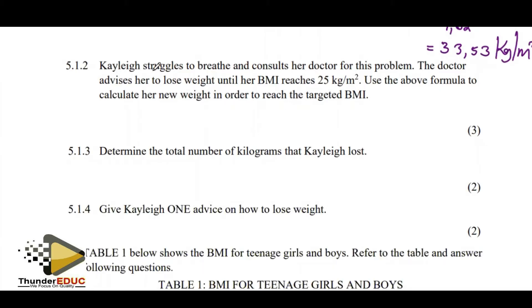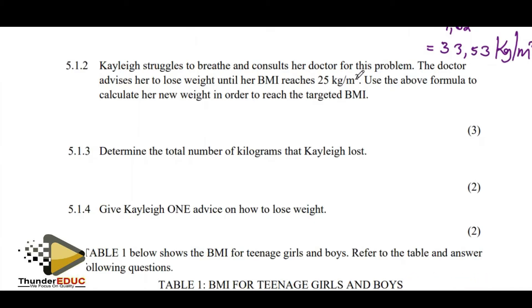K struggles to breathe and consults a doctor with this problem. The doctor advises K to lose weight until the BMI reaches 25 kilograms per meter squared. Use the above formula to calculate the new weight in order to reach a target BMI. Now, we have a BMI to reach.